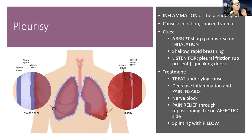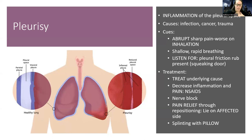If pain is getting severe or you notice a pleural friction rub when listening, start thinking there may be more inflammation going on. We can also give pain relief through repositioning — as odd as it sounds, we want them to lie on their affected side, like splinting. If it hurts to take a deep breath, applying counter-pressure or splinting makes it where it doesn't hurt as much when expanding. So have them lie on the affected side, or when coughing or taking deep breaths, splint with a pillow pressed up against them.